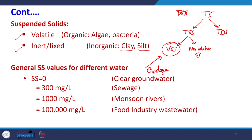VSS is very important. Typical SS values: for clear groundwater it is 0; for sewage it may be up to 300 mg/L; for monsoon river water it can be 1000 mg/L or more; and for food industry wastewater it may be up to 10,000 mg/L. Different types of wastewater have different SS values.